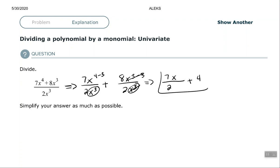So it can be written as this, or more than likely you will see it written as 7 over 2 times x plus 4. Either answer is okay.